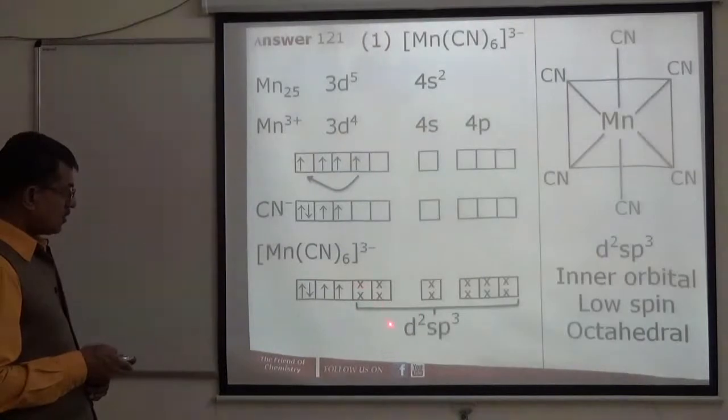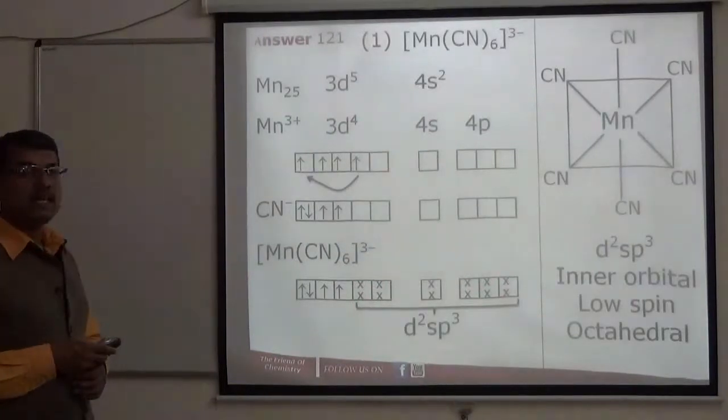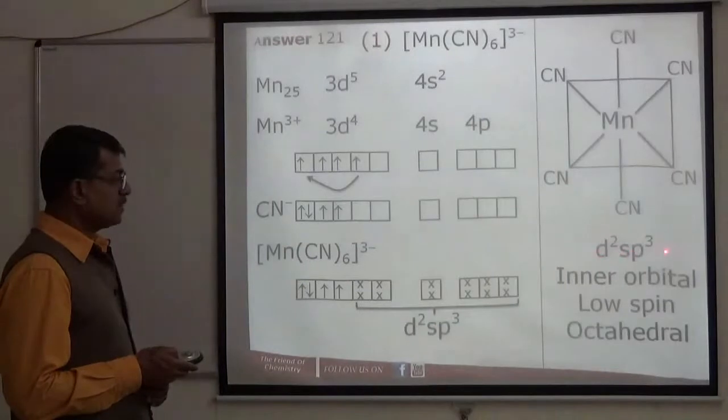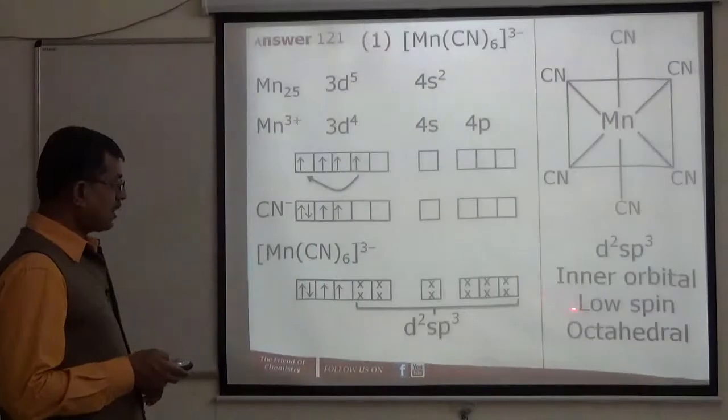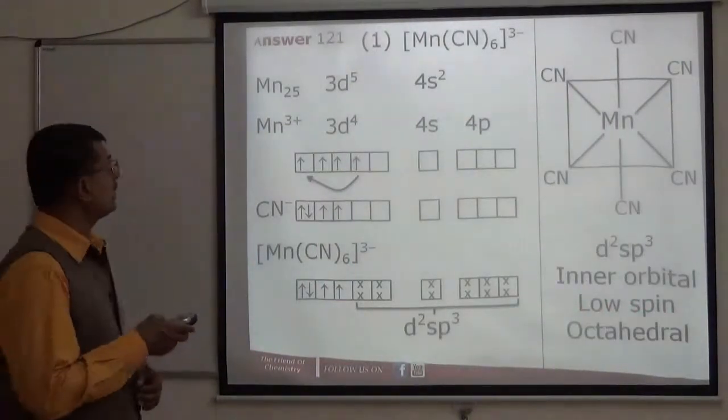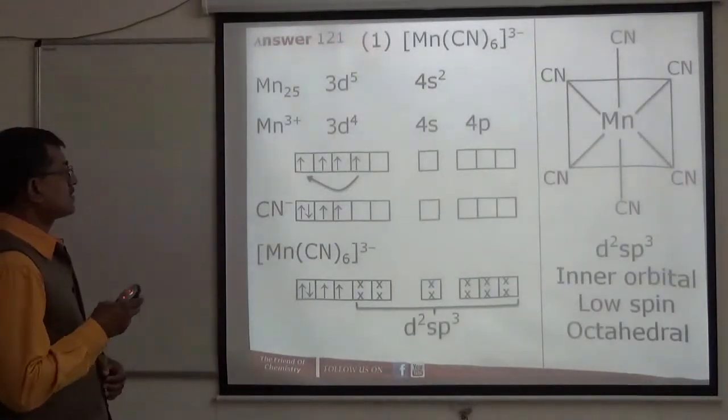These six orbitals overlap with cyanide ion to form metal-ligand bond. This compound has d2sp3 hybridization, meaning inner orbital complex is forming. Two unpaired electrons, low spin complex, and octahedral geometry. Question number 121 answer is first.